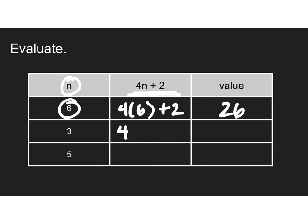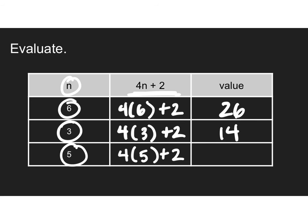In this problem, 4 times 3 plus 2. I can see that n equals 3 here. 4 times 3 is 12. Plus 2 is 14. And if n equals 5, our problem becomes 4 times 5 plus 2. 20 plus 2 is 22. Nothing different about that. Just the table looks a little bit different. But I just wanted you to see that as an example in case you come across one.